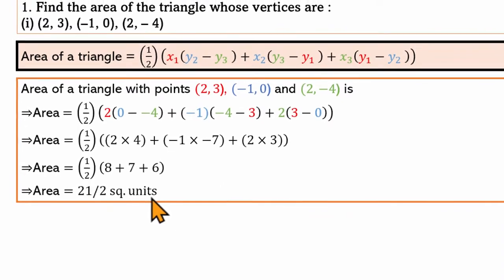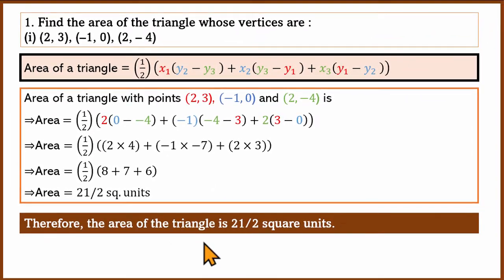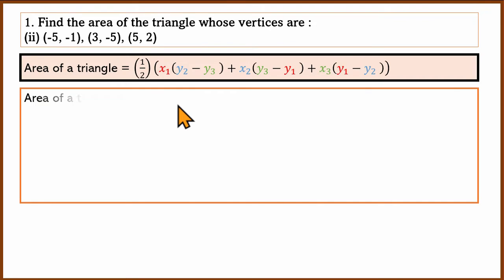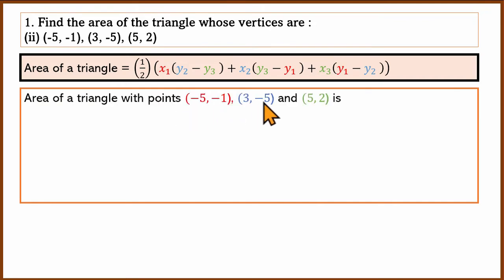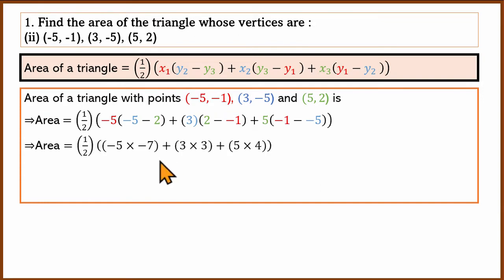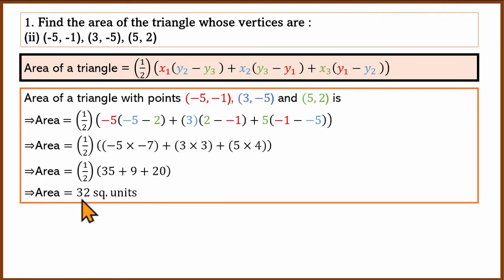This is the first question. In the triangle area, the vertices are given. Using the formula, the first point is red, the second is blue, the third is green. We substitute into the formula, then simplify through intermediate results, and the final answer is 32 square units.